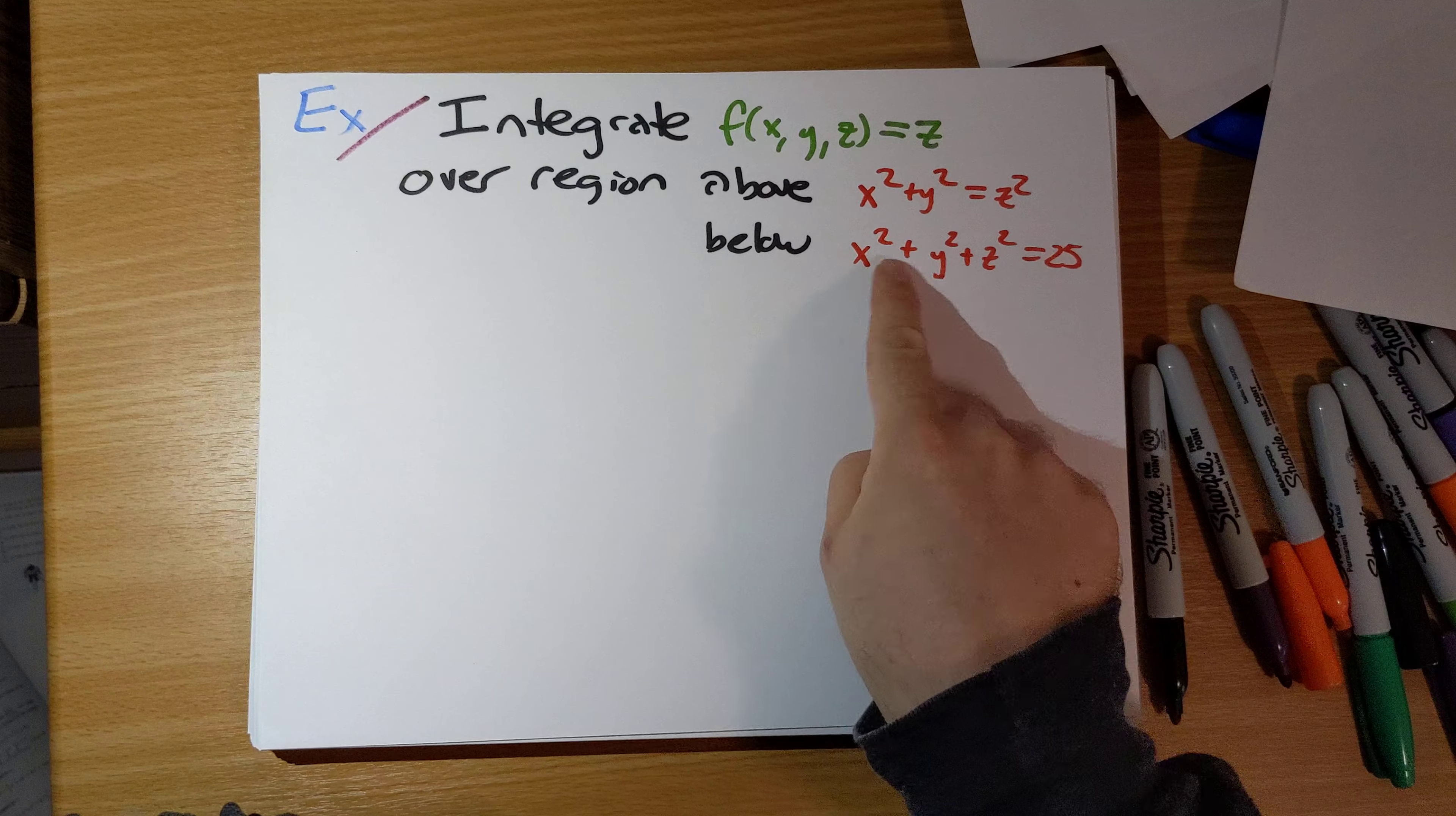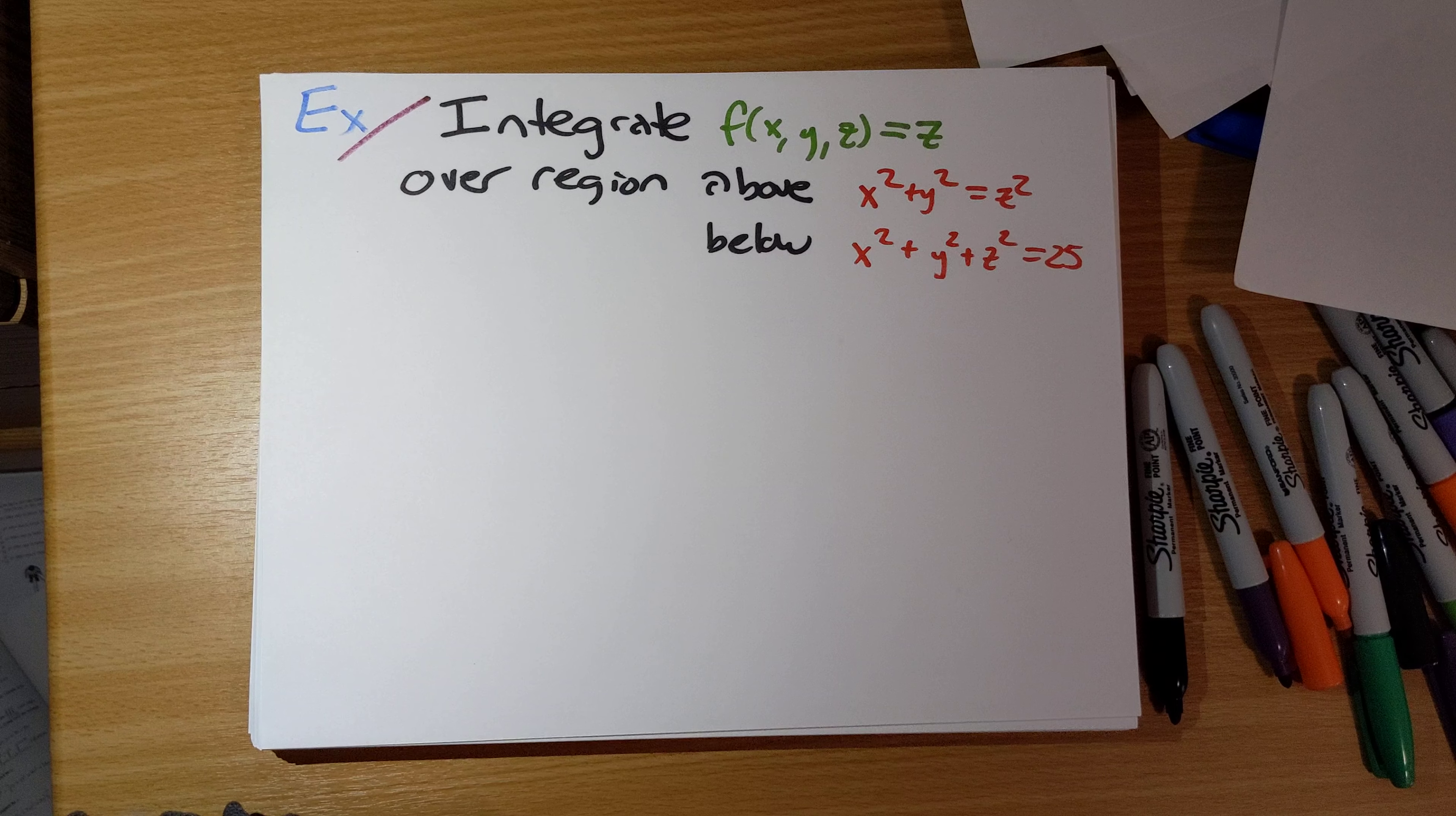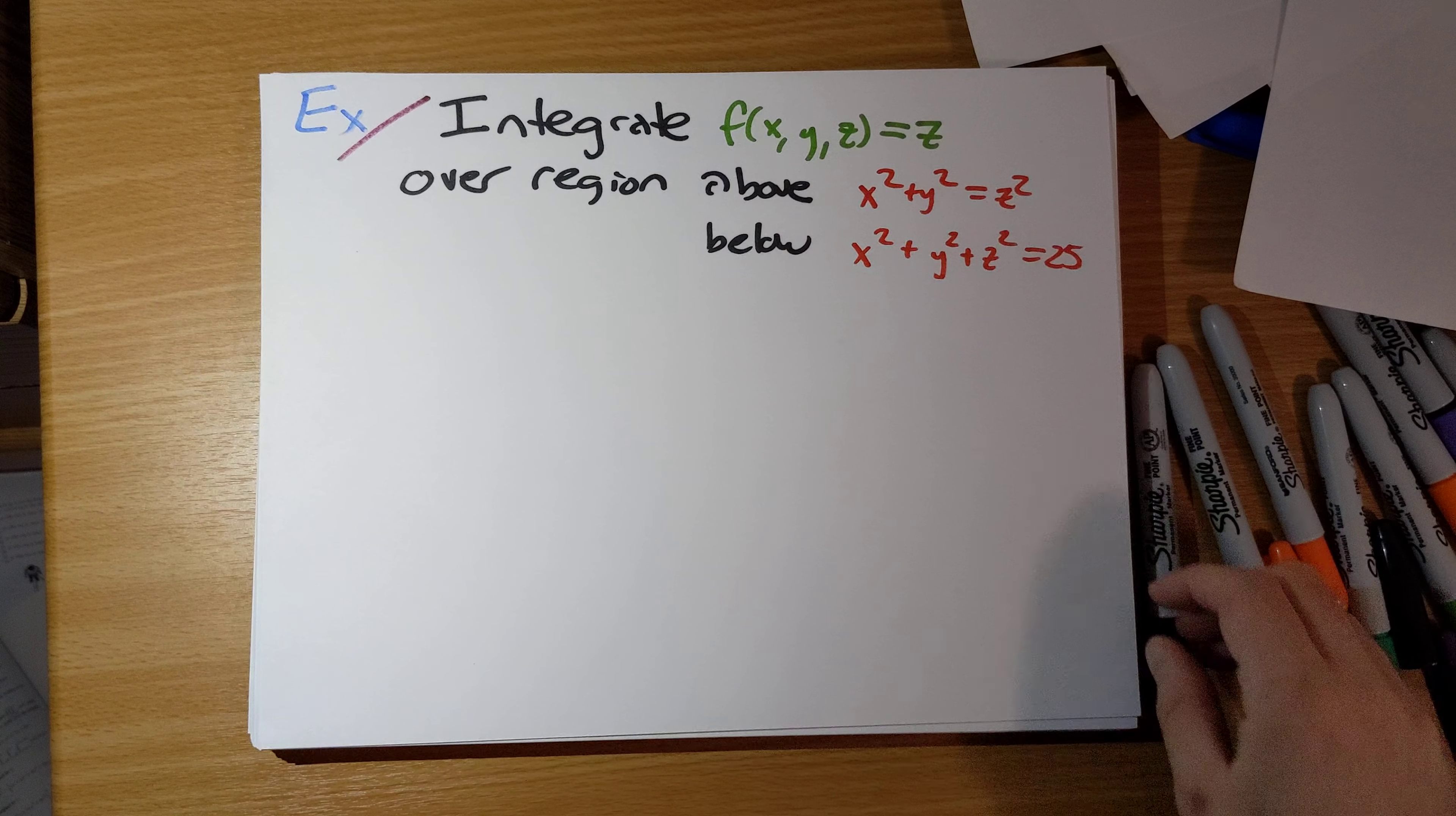So we see x squared plus y squared, x squared plus y squared plus z squared. Let's try to do this using spherical coordinates. Okay, so we want to do the appropriate change of variables here.